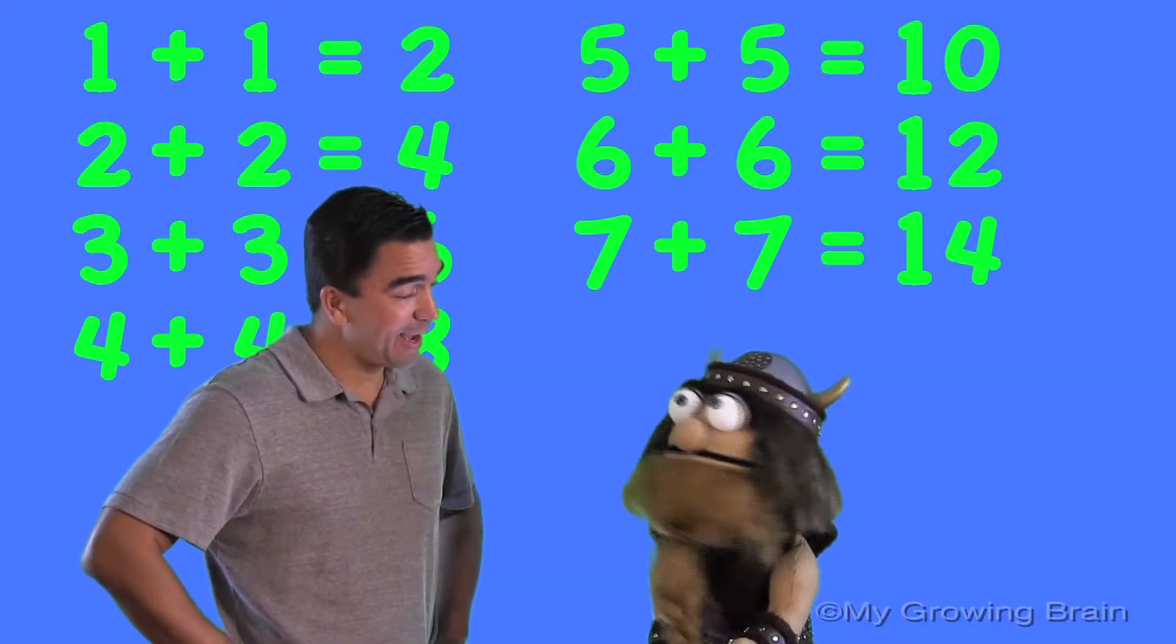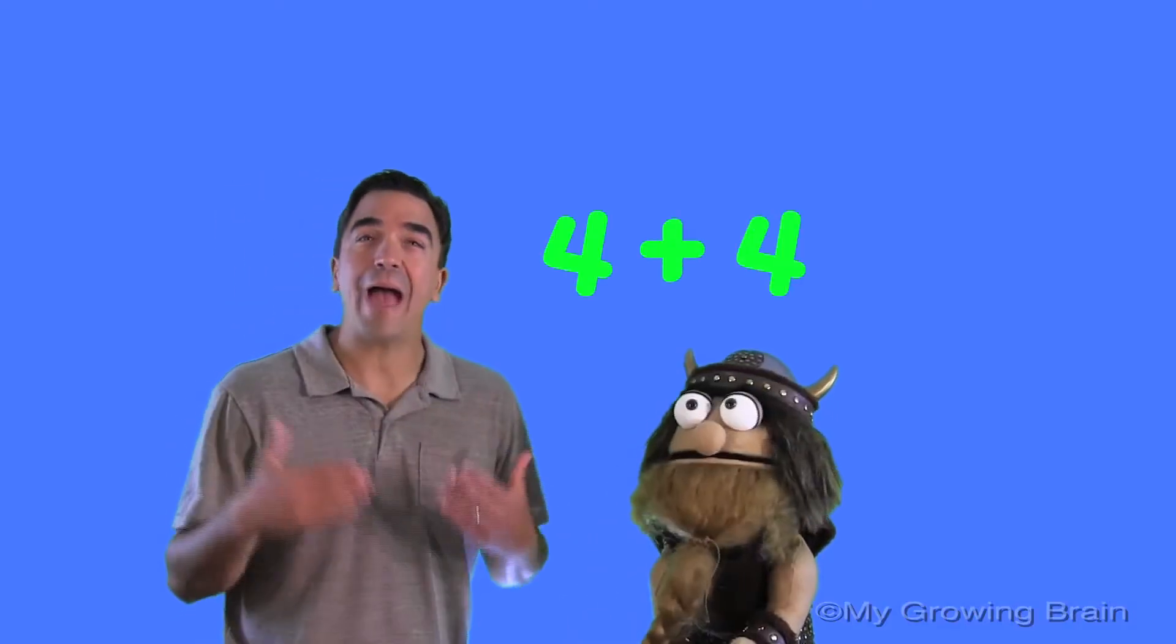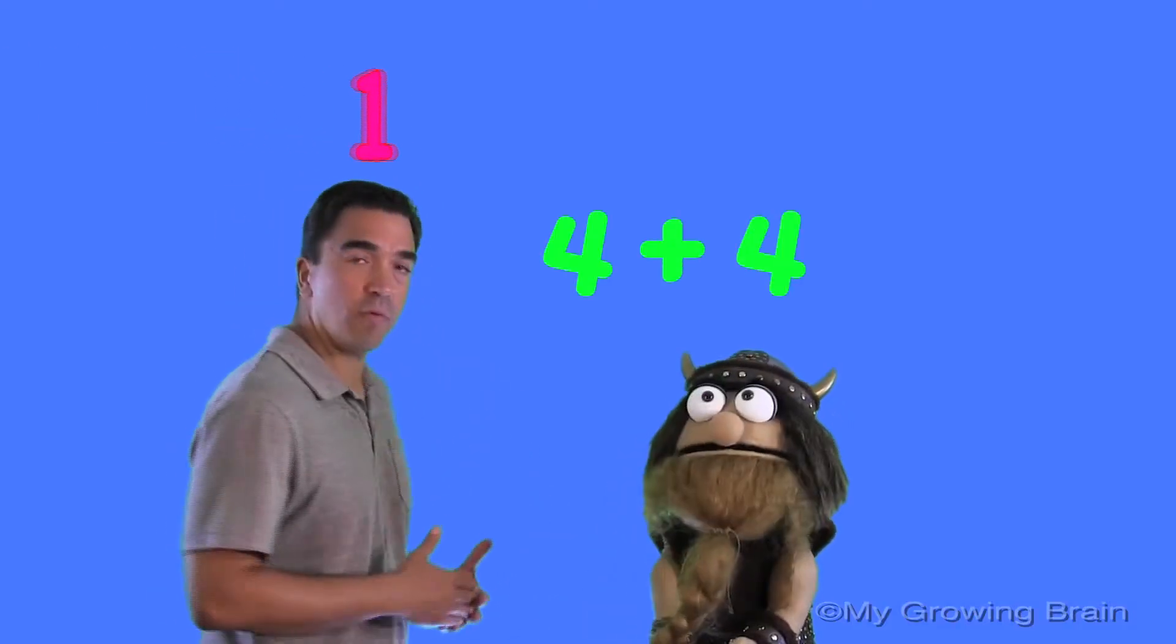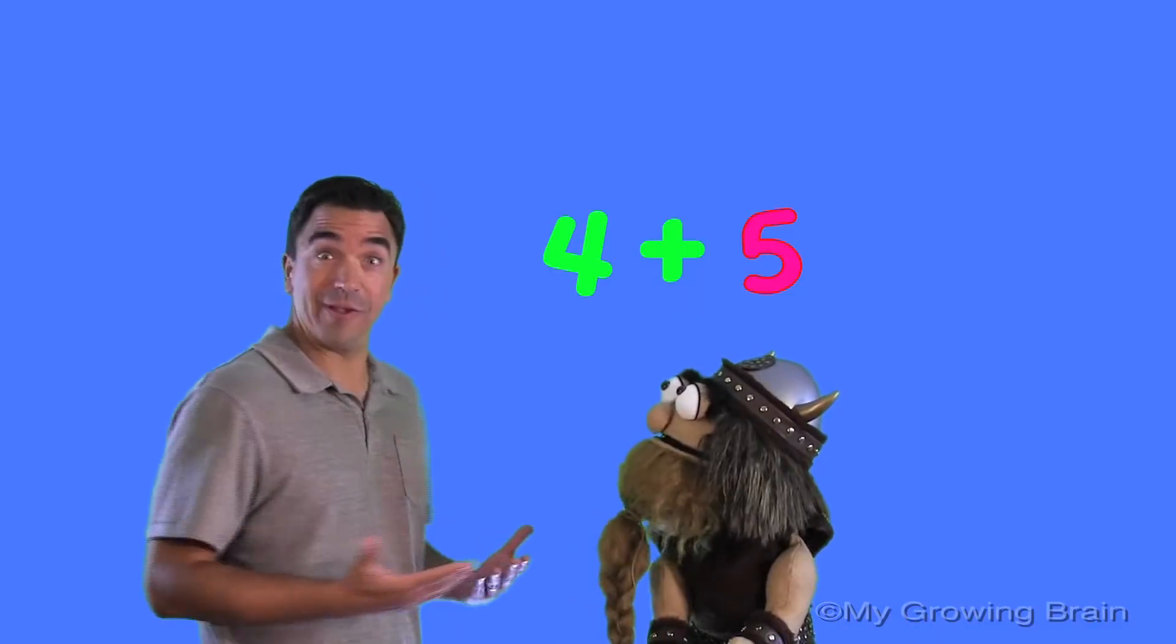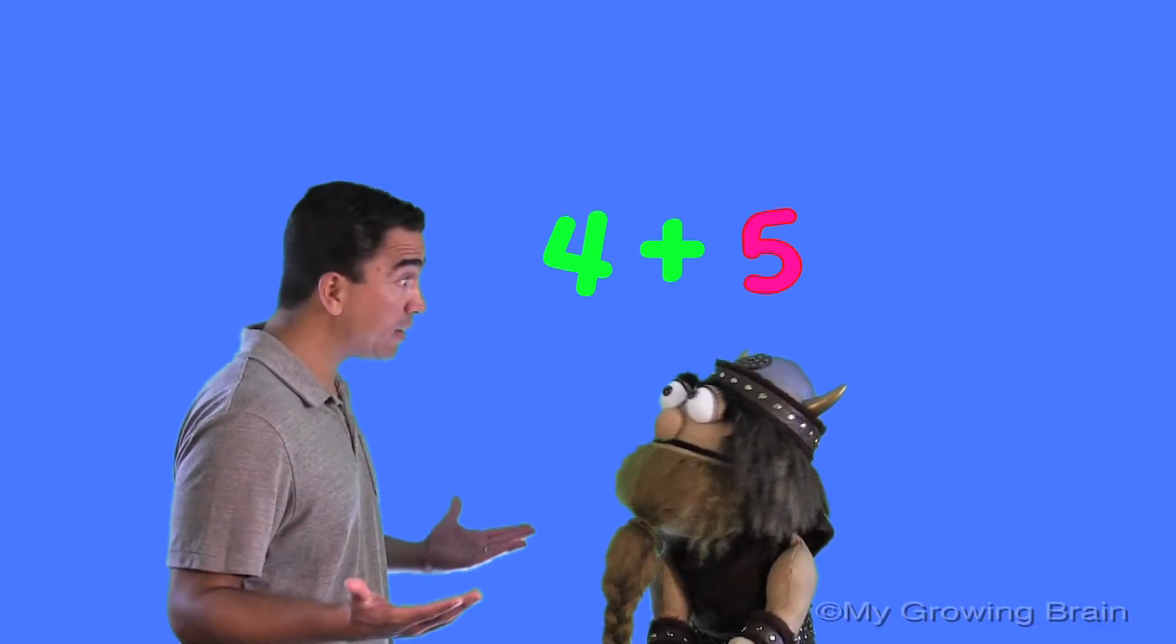Doubles plus 1? Yeah. Well, how does that work, Coach Mike? Basically, you take your doubles, like 4 plus 4, and you add a 1 to one of the 4s. Oh. Hence, you get plus 1. Oh.